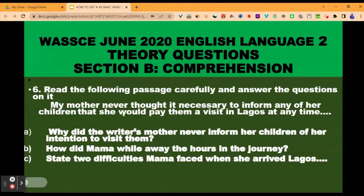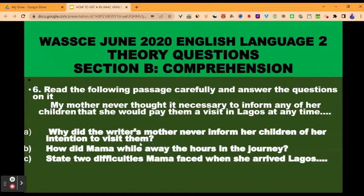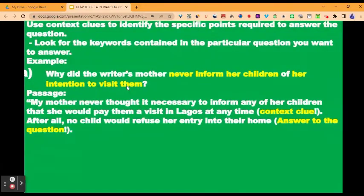This is an example of the passage: 'My mother never thought it necessary to inform any of her children that she would pay them a visit in Lagos at any time,' and so on. These are some of the questions on the passage. Question A: why did the writer's mother never inform her children of her intention to visit them? One thing you need to do in a comprehension question is to read the question first, then use the context clues to identify the specific points required to answer the question.